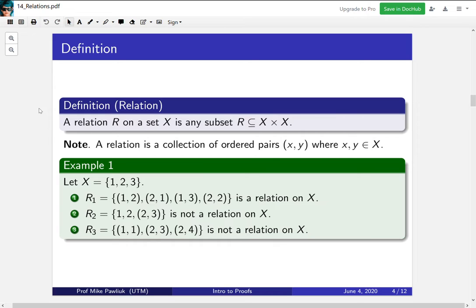The second example is not a relation on X, because it contains things other than just pairs. It contains the number 1 and the number 2. That means that it's not a relation. The third one is a relation on something, but it's not a relation on X. It contains this pair (2,4), and since 4 is not an element of X, this whole thing doesn't count as a relation on X.